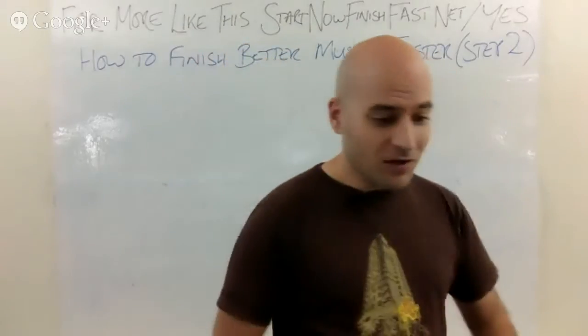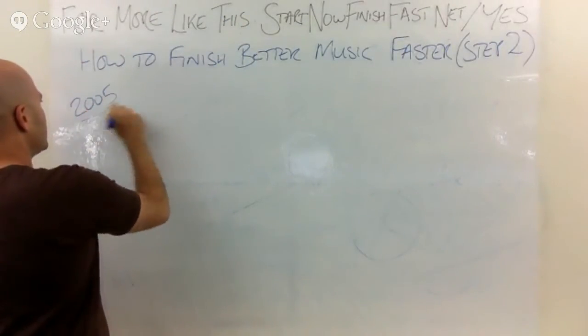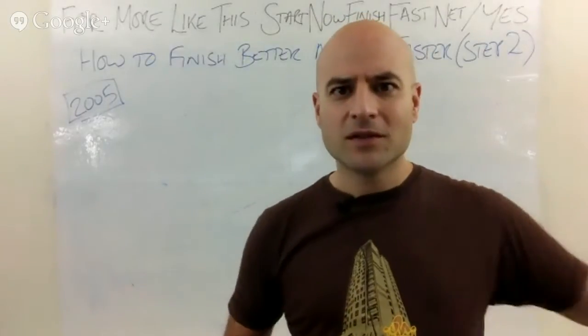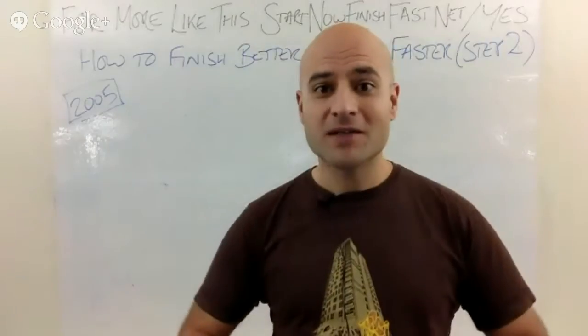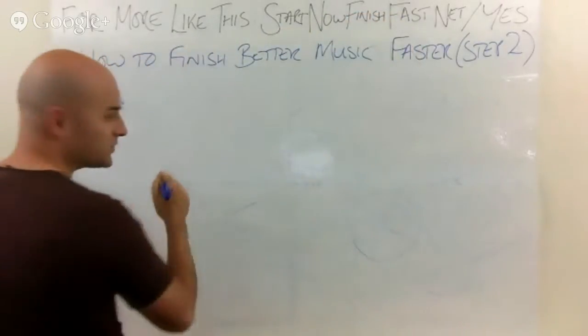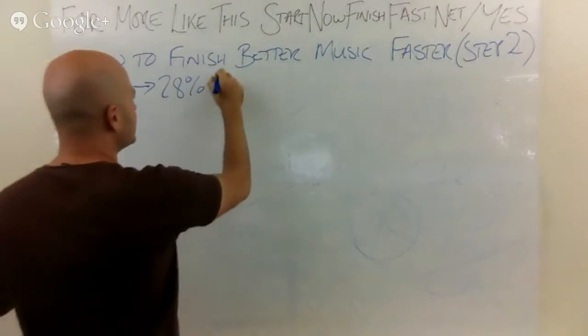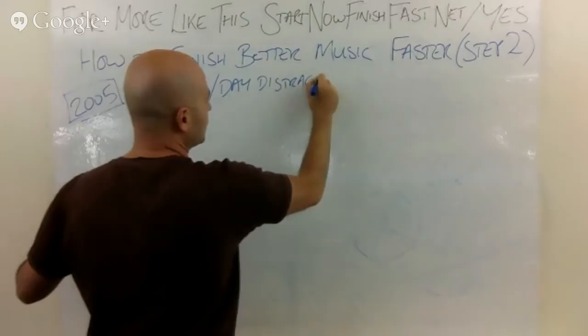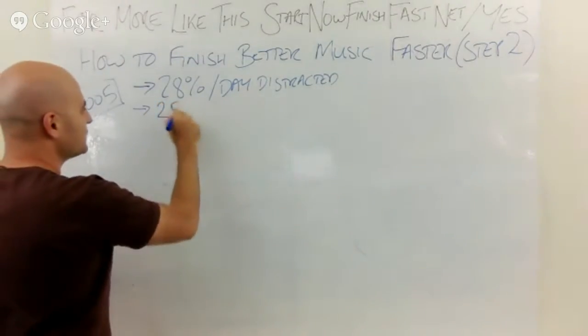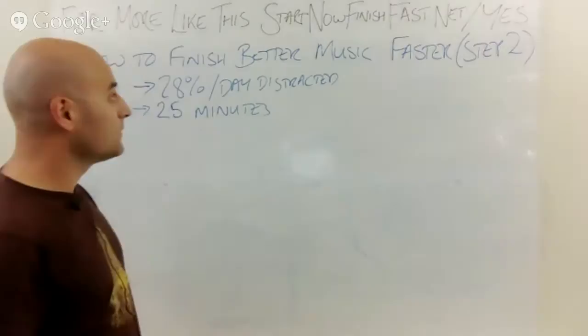There are two studies from back in 2005 which shed some light on how bad the problem is. Bear in mind, back in 2005 there wasn't Twitter, Facebook was still only on university campuses, there weren't iPads or iPhones. So the situation is much worse now. In 2005, two studies of office workers found that on average they spent 28% of their day distracted, not focused on their task. When they did get distracted, it took them on average 25 minutes to get back to the task, if they did at all.